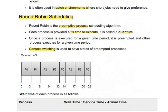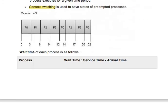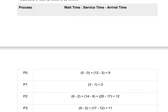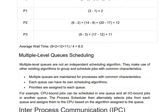So these are the different process scheduling algorithms. One more algorithm remains — multiple level queue scheduling — which we will discuss in our next video. Thank you.